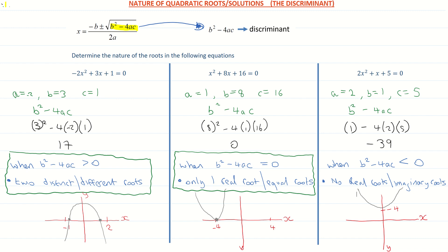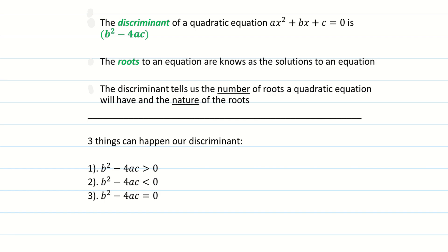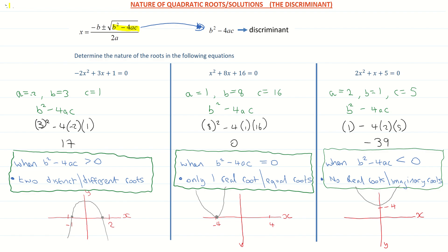So let's recap. We have three scenarios. When b squared minus 4ac is greater than 0, it has two distinct roots. When the discriminant is less than 0, we have imaginary roots — none. And when b squared minus 4ac is equal to 0, it has one distinct root. Remember, the discriminant of a quadratic equation is given by b squared minus 4ac. The roots of an equation are the solutions to the equation — where it cuts the x-axis. That's our revision video on the discriminant, i.e. the nature of the quadratic roots.